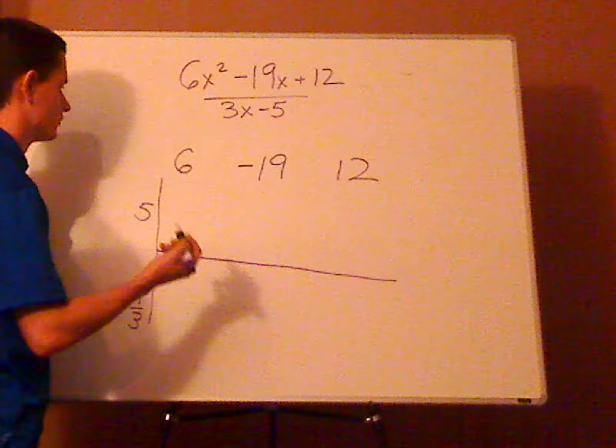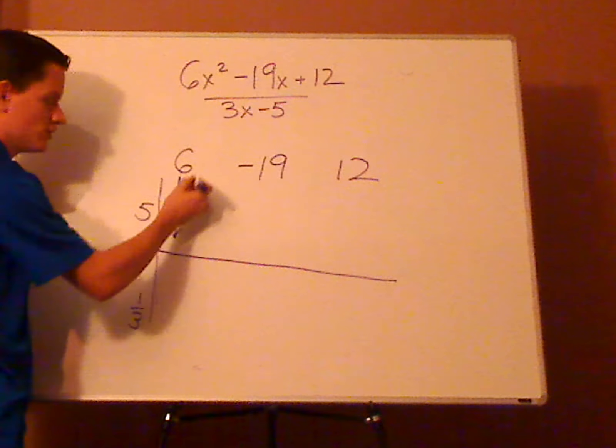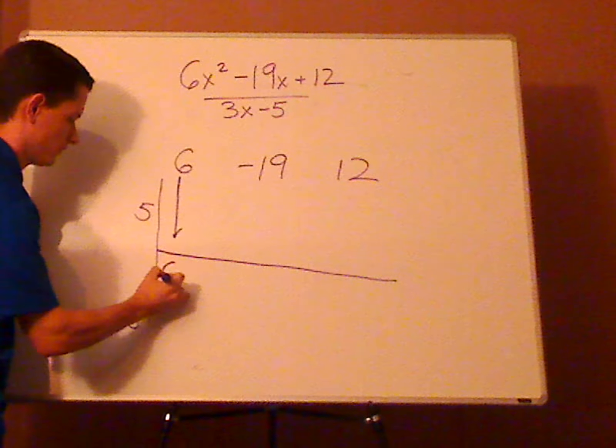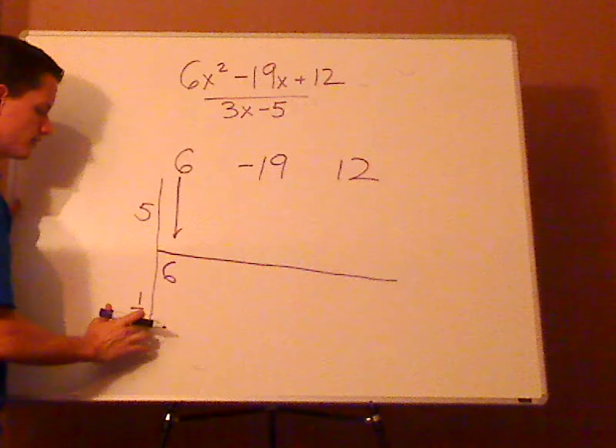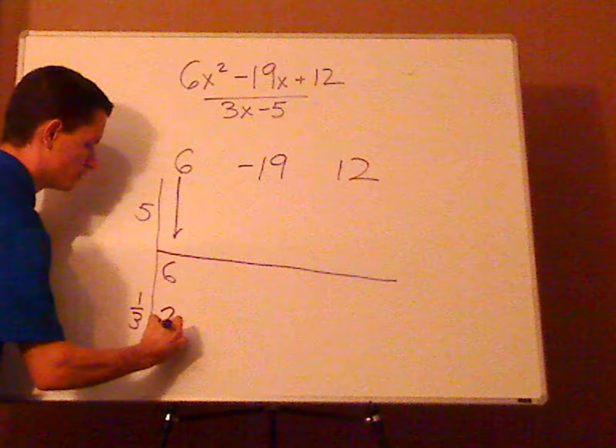Alright, this is what you are going to do. Same thing as you did with the regular Synthetic Division. Just bring down the 6. Now take the 6 and multiply it by 1 third. So 6 times 1 third is 2.